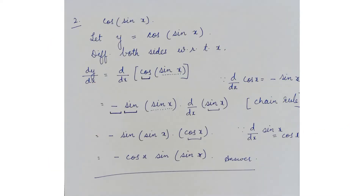We move to question 2. It is given as cos(sin x). First step: let y = cos(sin x). Differentiating both sides with respect to x, we get dy/dx = d/dx[cos(sin x)]. You know that d/dx(cos x) = −sin x.